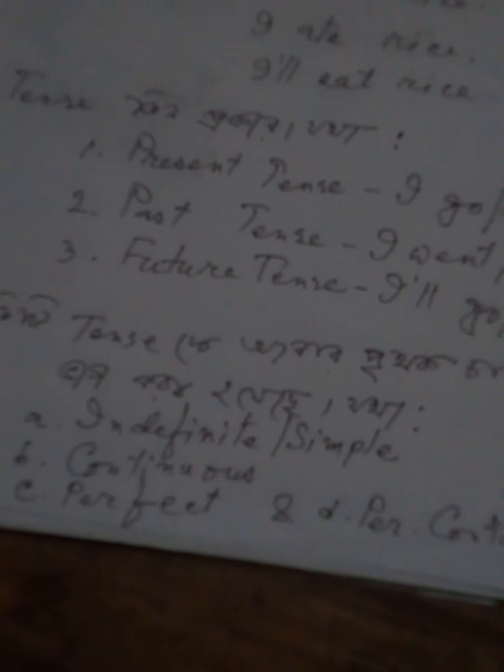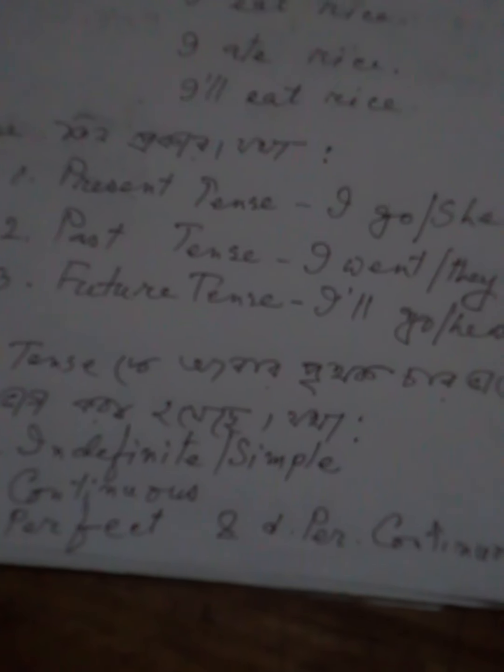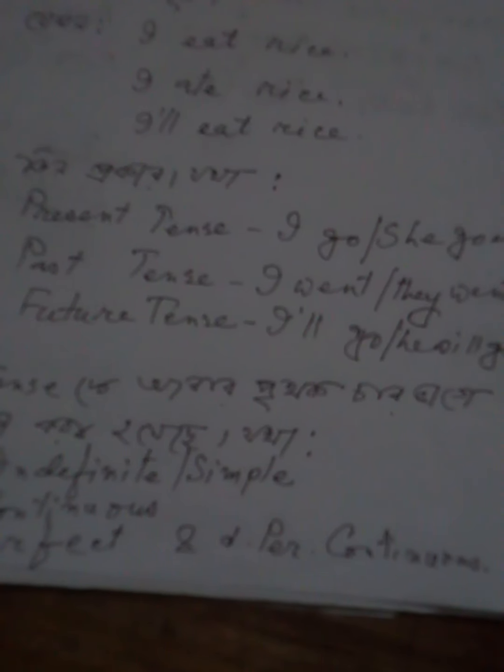Each tense is divided into four parts: indefinite, continuous, perfect, and perfect continuous. So present tense gives us: present indefinite, present continuous, present perfect, and present perfect continuous. Past tense gives us: past indefinite, past continuous, past perfect, and past perfect continuous.